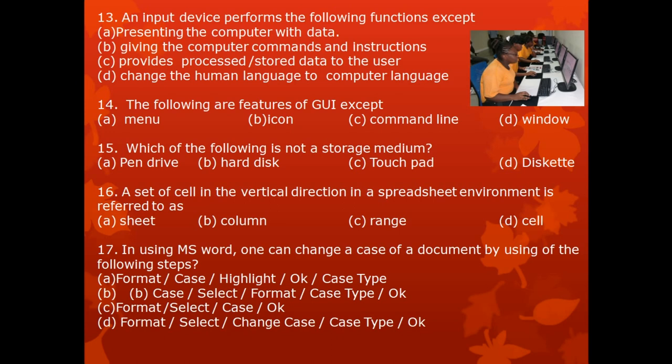Question 17. In MS Word, one can change the case of a document using the following steps. A. Format → Case → Highlight → OK → Case type. B. Case → Select → Format → Type → OK. C. Format → Select → Case → OK. D. Format → Select → Change Case → Change type → OK.